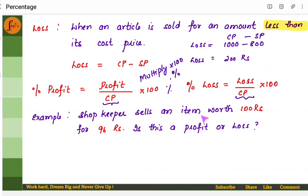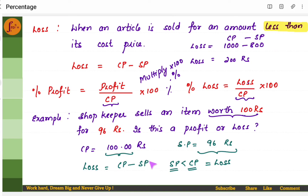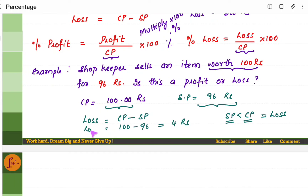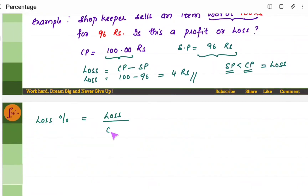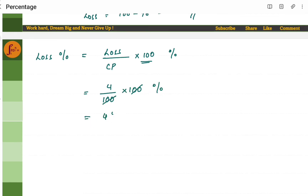Let us take an example. A shopkeeper sells an item worth 100 rupees for 96 rupees. Is this a profit or loss? The actual cost price is 100 rupees and the selling price is 96 rupees. Since the selling price is less than the cost price, he is at a loss. Loss is cost price minus selling price, which is 100 minus 96 equals 4 rupees. For loss percentage: loss divided by cost price into 100 gives 4 divided by 100 into 100, which is 4%. So the loss percent is 4%.